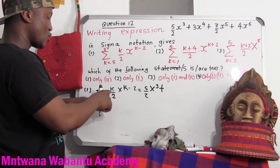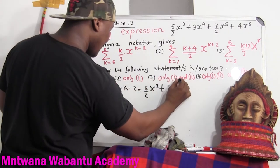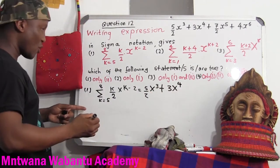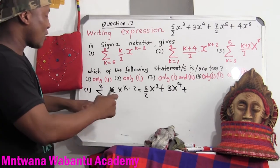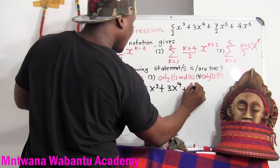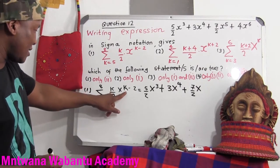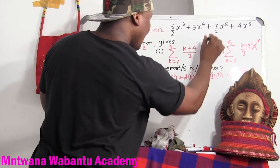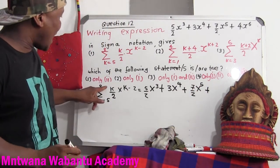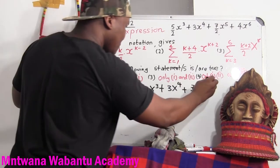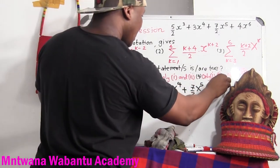Now k equals 6: 6 divided by 2 equals 3, times x to the power of 6 minus 2, which is x to the power 4. Now k equals 7: 7 over 2 times x to the power of 7 minus 2, equals x to the power 5. Now k equals 8: 8 divided by 2 equals 4, times x to the power of 8 minus 2, which is x to the power 6.